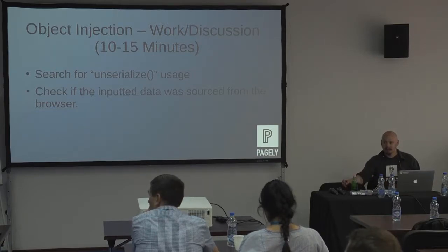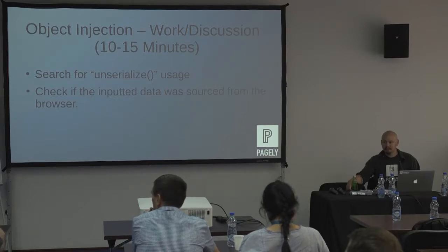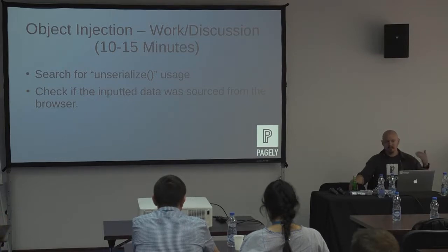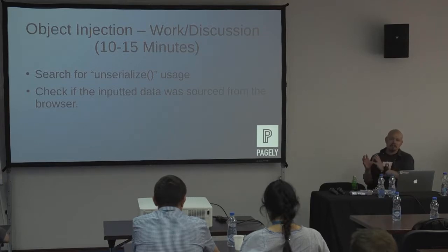How do you write a proof of concept that's similar to what the author would see? When I write to plugin authors, I include a proof of concept. That takes me a little bit more time to write, but effectively on many of these things, you've got to dig into the code. You've got to figure out how to get to that section of code, like that specific line of code.